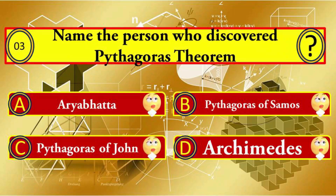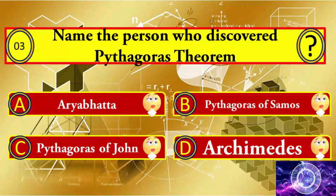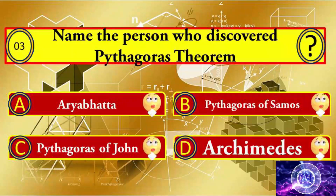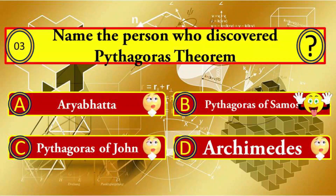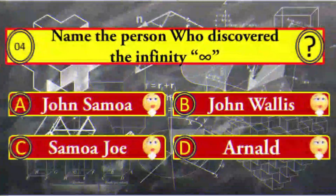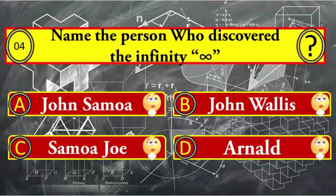Question number three: name the person who discovered the Pythagoras theorem. Your options: A) Aryabhatta, B) Pythagoras of Somers, C) Pythagoras of John, D) Archimedes. Pythagoras of Somers is the right answer.